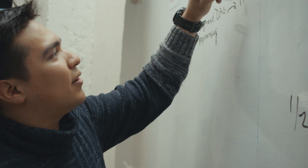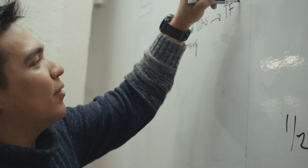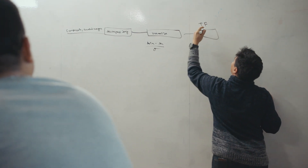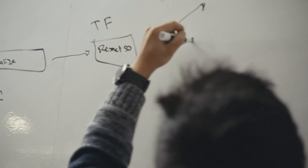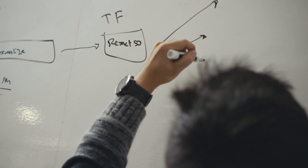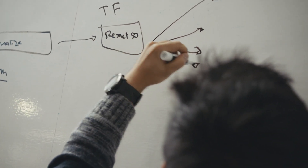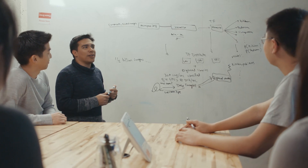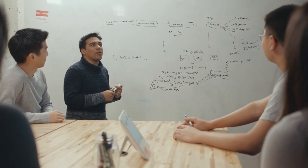BigHead is Airbnb's machine learning platform. We had the idea of making it very agnostic to different ML frameworks. We leveraged TensorFlow to train the model, and then BigHead helps with the model lifecycle, the feature management, and TensorFlow Serving to help serve the model results.